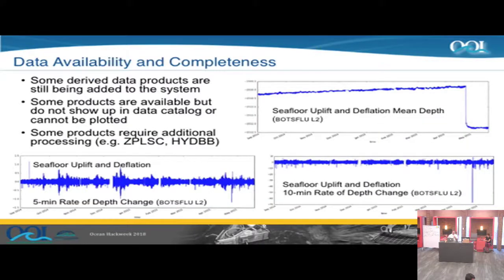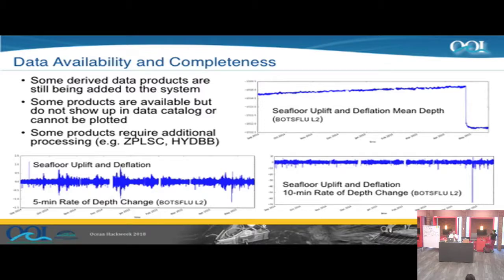The system is still being improved and added to over time. There are still a few derived data products that need to be added, such as the BPT (bottom pressure-tilt unit) level-two products that Bill Chadwick would like to have added. There's also the broadband hydrophones — there's currently no way to scroll through or listen to hydrophone data without going to the raw data archive, and we'd like that added to the system since it was originally in the requirements.